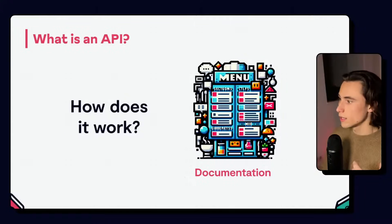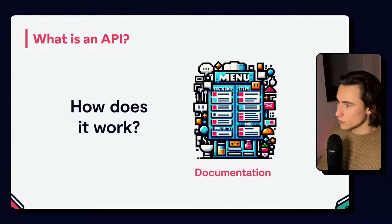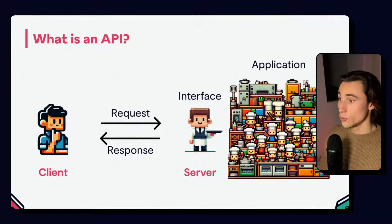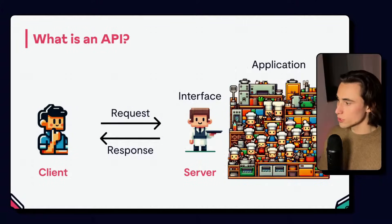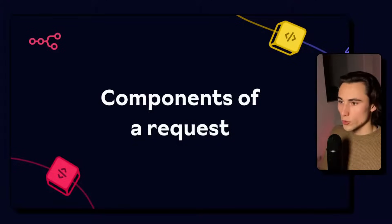So how does an API work? It uses what's called documentation. Documentation explains how the application programming interface or API works. Using the restaurant analogy, this would be the menu. A little bit of terminology: we send a request through the interface to the application, and the application uses the interface to send a response. We also have the client-server notions. In this case, you would be the client, and the application and the interface would be the server.